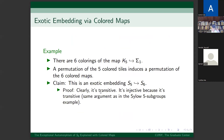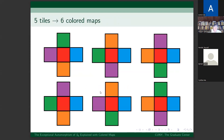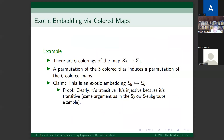How do we get the exotic embedding of S5 into S6 via colored maps? There are six colorings of the five-faced map on the torus. A permutation of the five colors induces a permutation of these six colored maps. The claim is that this gives an exotic embedding of S5 into S6: it is transitive because any coloring can be turned into any other by switching colors, and it is injective by the same argument as in the Sylow 5-subgroup case.